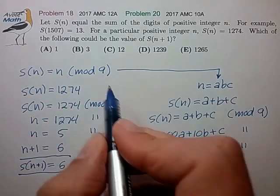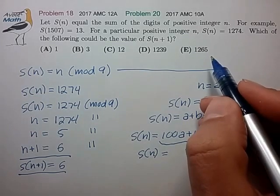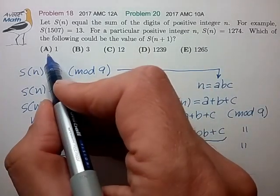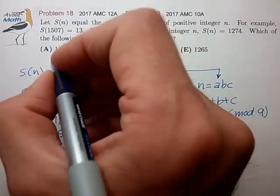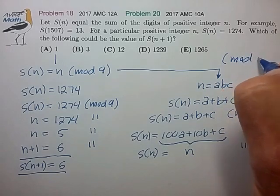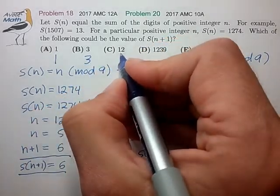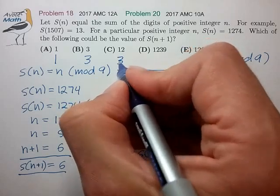And now we can test all the available choices for what their residue is in mod 9. So let's go down the list here. So in mod 9, 1 is just equal to 1. Again in mod 9. 3 is just equal to 3 in mod 9.